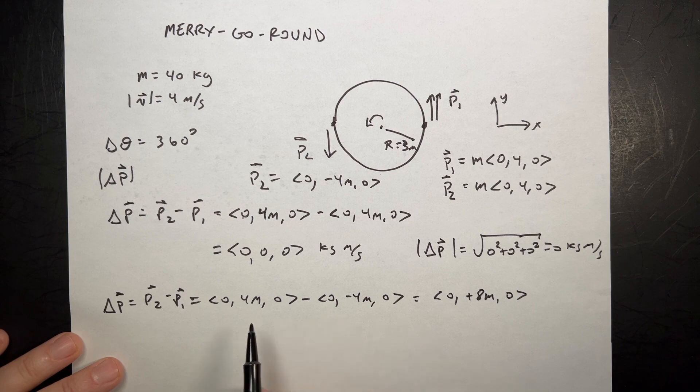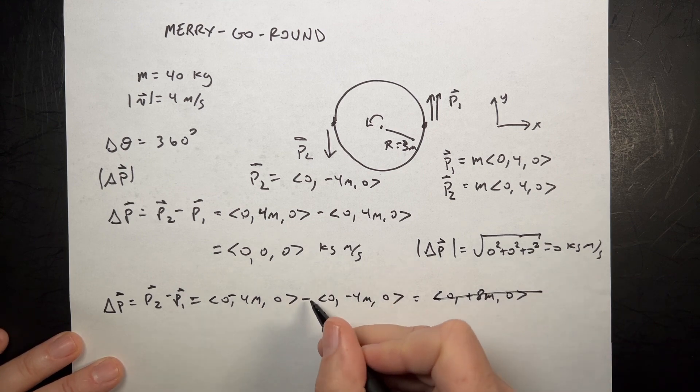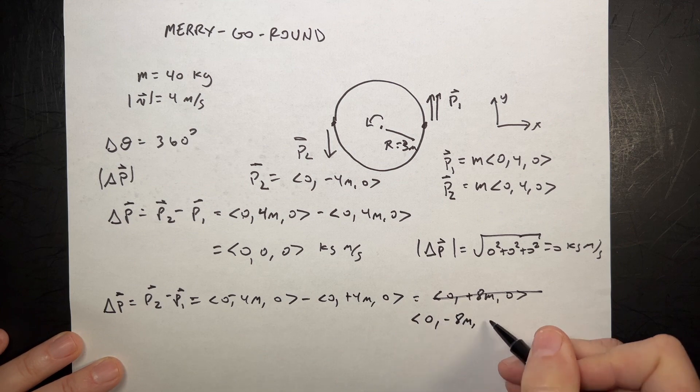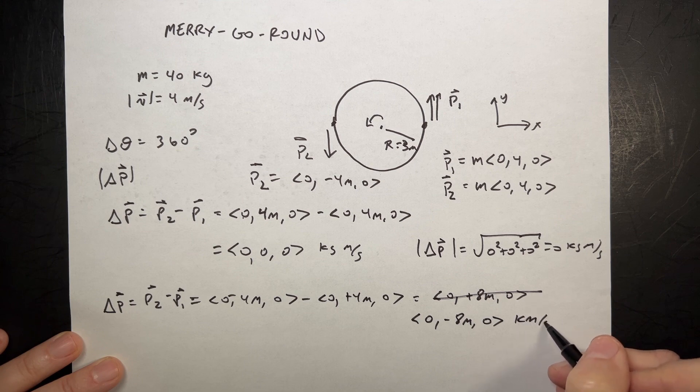Is that right? The change in final, I'm sorry, I got this backwards, that's why. That's negative. That's plus. So it is 0, yeah, 0 minus 8m, 0 kilogram meters per second.